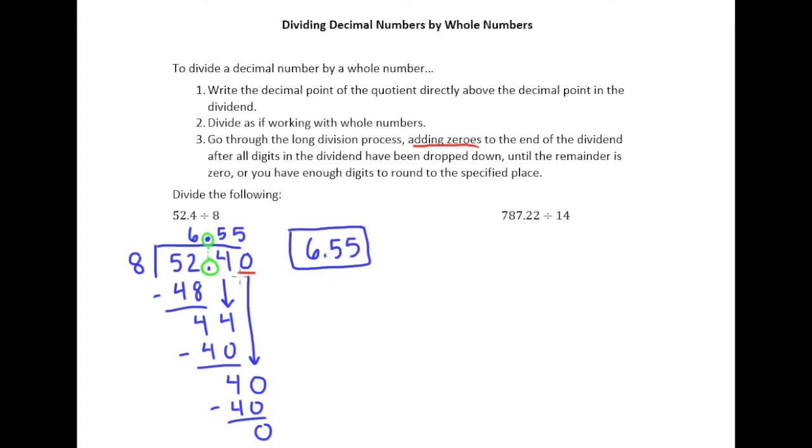Until the remainder is zero or you have enough digits to round to the specified place. And again, the reason we stopped in this first example is because we found the remainder to be zero, finally, at this point.